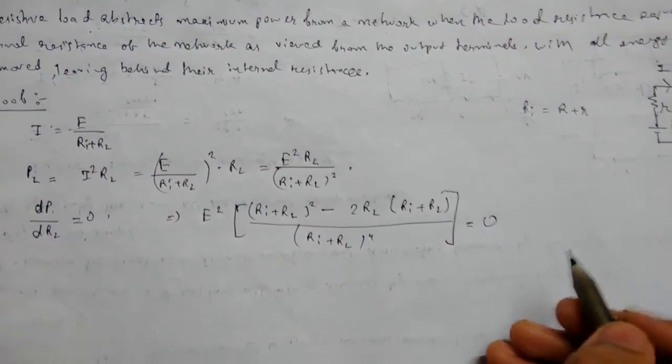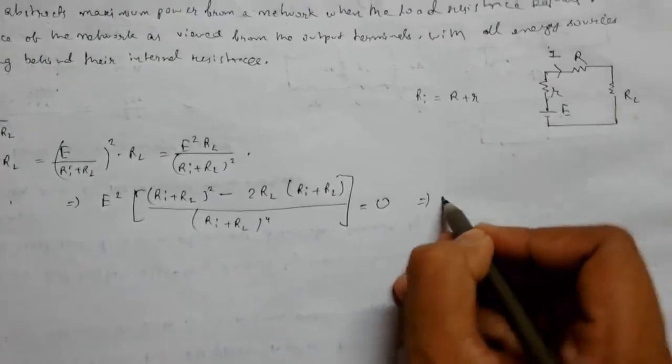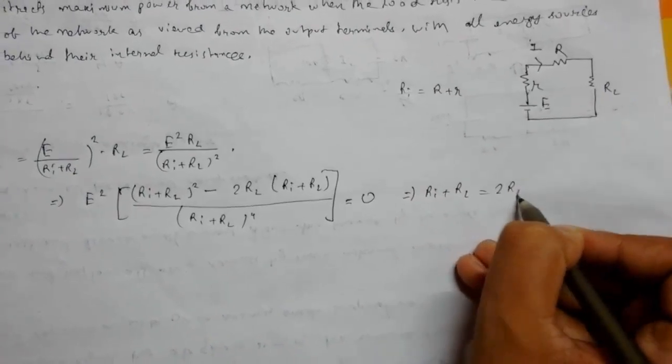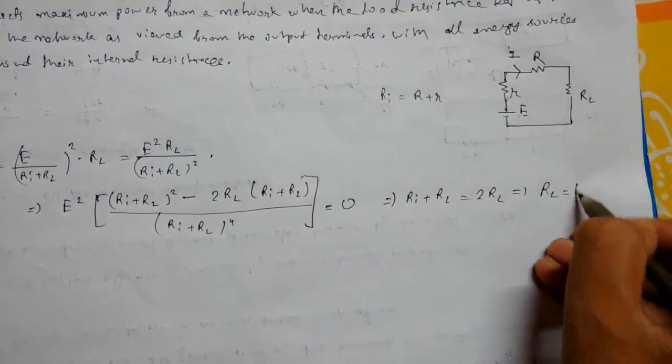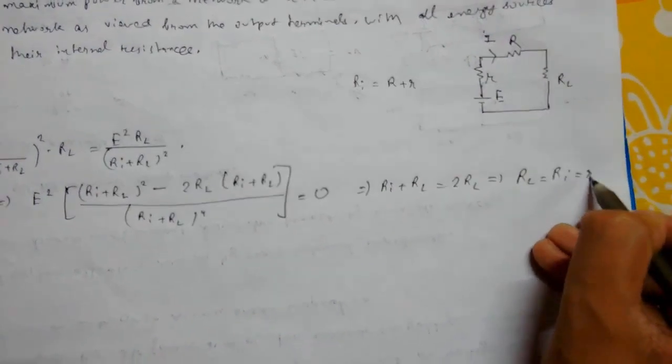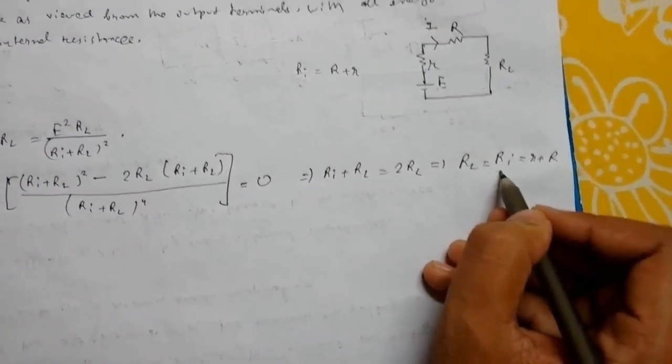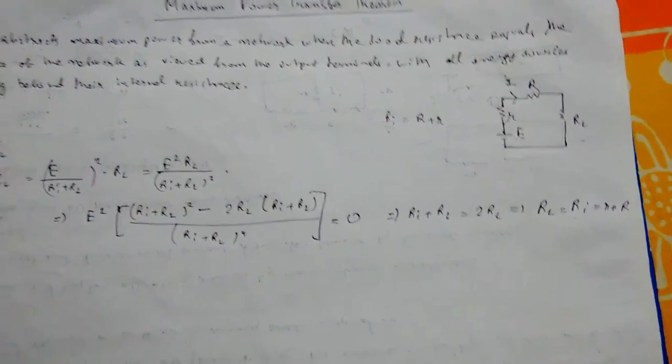2RL(RI+RL)]/(RI+RL)⁴. Using quotient differentiation, this equals zero, and we get RI + RL = 2RL. Simplifying, we see that RL equals RI. So the internal resistance equals the load resistance